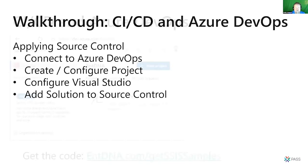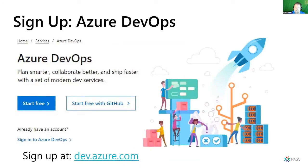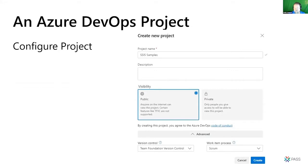We're going to look at applying source control in Azure DevOps by first creating an organization. My organization is Enterprise Data and Analytics, or ENT DNA. Then you create a new project. You can sign up for Azure DevOps — they usually have a free deal, and I'm almost positive they still offer teams of up to five developers free use. You set up your account, create your organization, create a new project, and you can set projects as publicly visible or private.